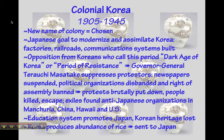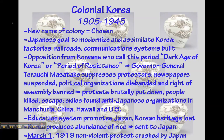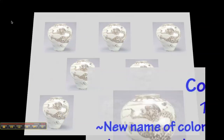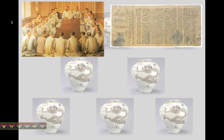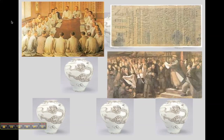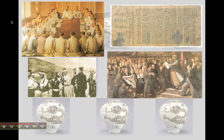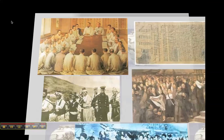In addition to forcing their culture, the Japanese also took their food. Korea produced an abundance of rice, but this was sent to Japan. All of this led to the March 1st Movement in 1919, which was a non-violent protest brutally crushed by the Japanese.